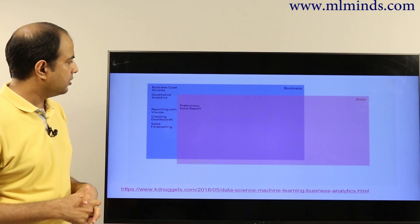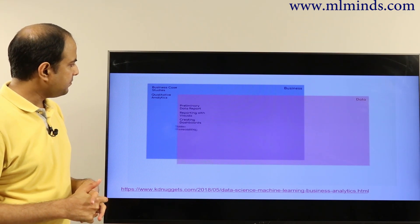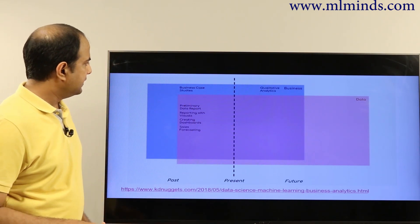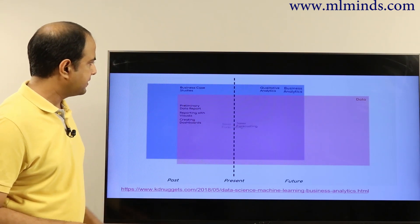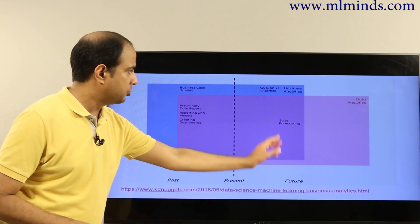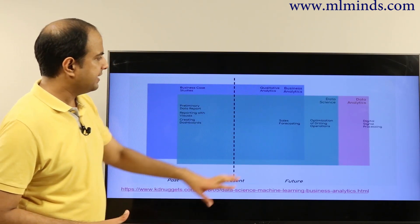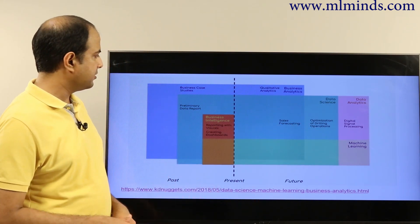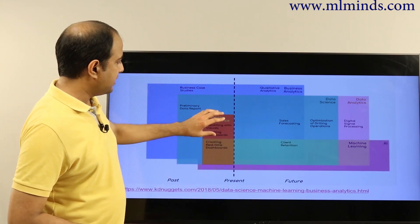If you're doing sales forecasting, it's really science. But if you're doing qualitative analysis, it's not really data science. Data science is really about predictive, so it's forecasting, optimization of drilling operations, and so on.